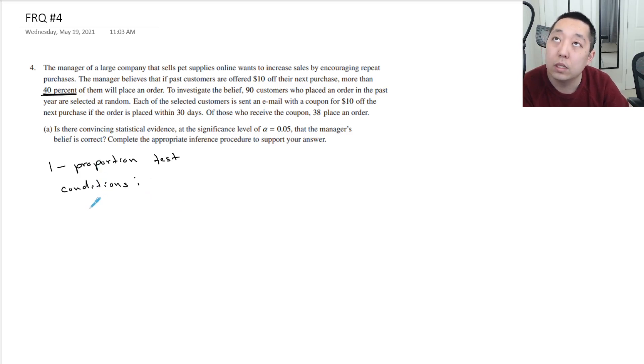There are generally three conditions we always look at. One is independence. Independence would occur if the sample size is less than or equal to 10% of the population. Here, he sends it to 90 customers. And do we think it's less than or equal to 10% of the population? Well, I mean, basically, is there at least 900 customers? It's a large company. It sells pet supplies online.